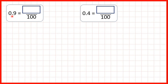We need to convert decimals into fractions with a denominator of 100. First we have 0.9. The first digit after the decimal point tells us how many tenths we have, so 0.9 is 9 tenths.